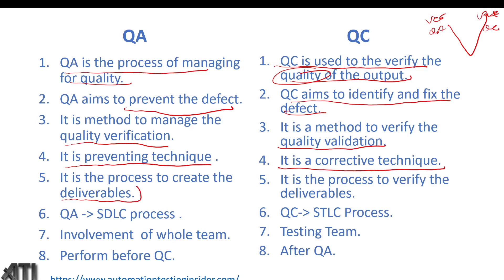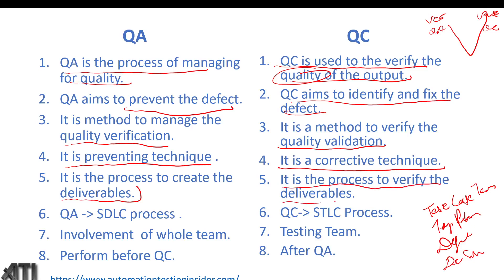QA is the process to create the deliverables — the QA team helps prepare all the templates such as test case summary template, test case document, test plan, defect report, and defect summary report. All these documents are prepared by the QA team. QC is the process to verify those deliverables — when we write test cases, we verify all those deliverables to check whether things are working correctly or not.